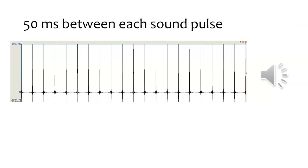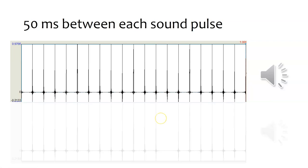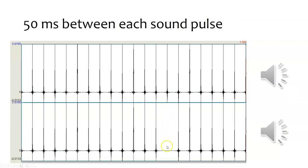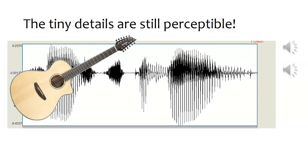If you heard a series of sound pulses separated by 50 milliseconds, they would sound very rapid. Imagine having to detect if just one in that sequence was out of place — as it turns out, we can do that. If one pulse is missing from the sequence, you can hear the difference. That little detail can be picked up by our ears and auditory system, whether you're talking about speech or music.